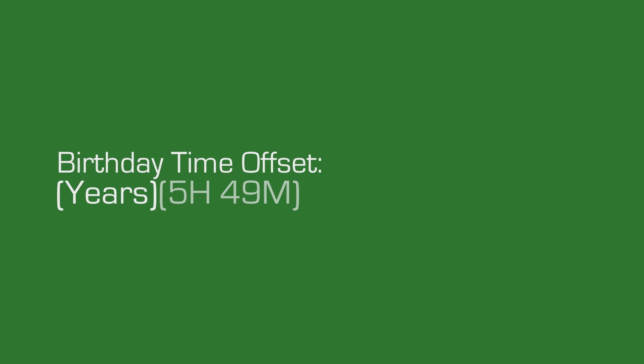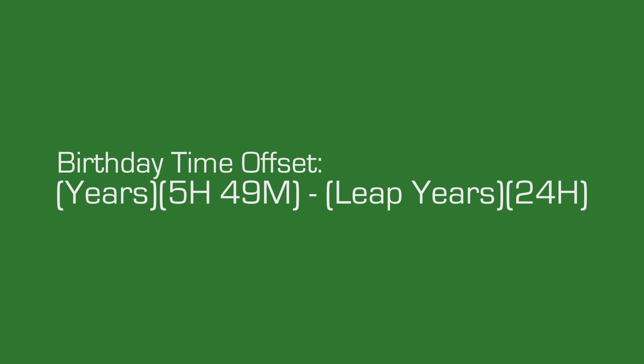So if we want to be really, really precise, the anniversary of our birth could fall on the date before or after the calendar date that we were born on. That date drift largely depends on when you were born in relation to a leap year and at what time of the day. But don't worry, it's pretty easy to figure out when your birth anniversary is. All you have to do is multiply the number of years you've been around by 5 hours and 49 minutes, and subtract the number of leap years you've experienced multiplied by 24 hours. Take your positive or negative result and add it to your birth time, and that will give you your birth anniversary time.